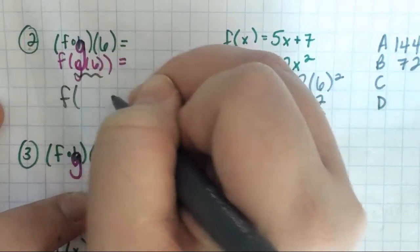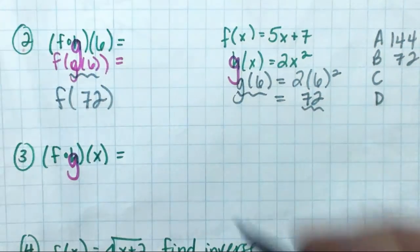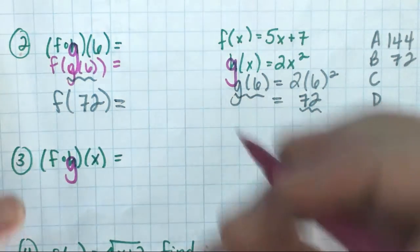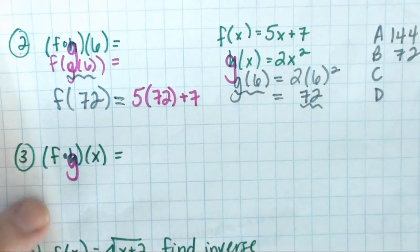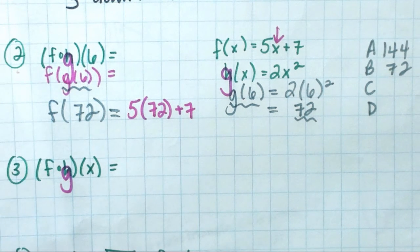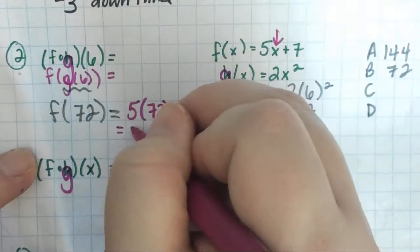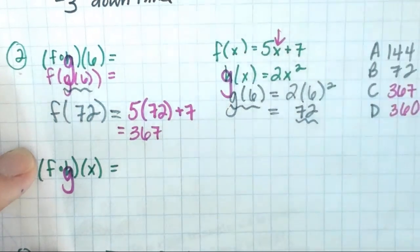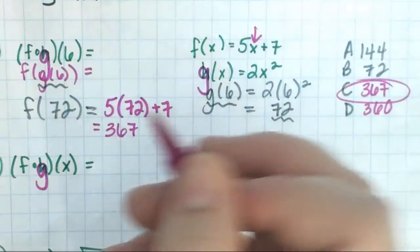They said F of G of 6, which is what Landon was saying. So I'm going to take that 72. G of 6 was 72. I actually want F at 72. So it used to be 5X plus 7. Now it's 5 times 72 plus 7 because everywhere I used to have an X, I'm plugging in that 72. It is 367. So I bet some people will forget to add the 7, so if I were them I would have 367 and 360 as answer choices.